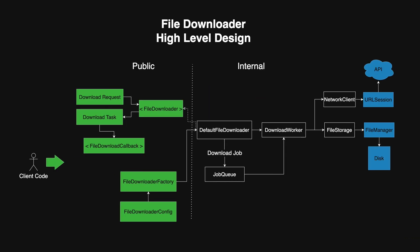Let's move on to the coolest part — the high-level design of our library. Don't worry if the diagram looks a bit intimidating; we'll break it down piece by piece. The schema is divided into three areas. The green part contains public-facing components used by our clients to schedule and manage downloads. The white middle part is our internal implementation that handles the queuing and fetching logic. And the blue part on the right represents system libraries for networking, disk storage, and file hosting API.